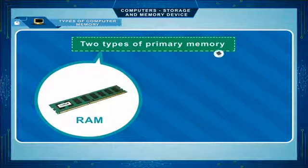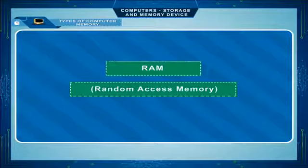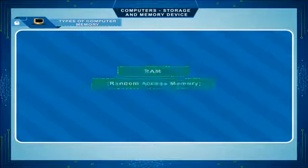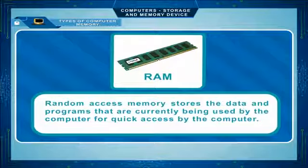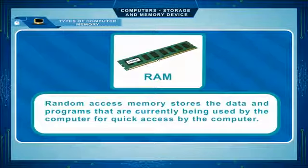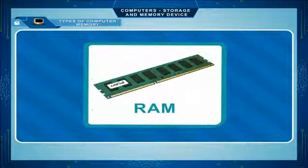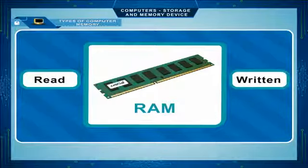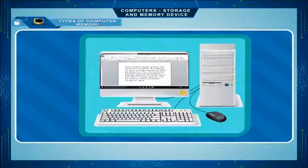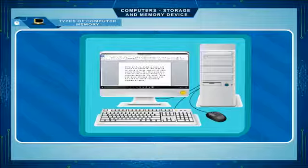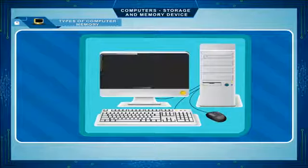Random Access Memory (RAM) stores the data and programs currently being used by the computer for quick access. The RAM can be read from and written onto, and is therefore also known as read-write memory. Its contents are lost when the computer is switched off, making it a volatile or temporary memory.